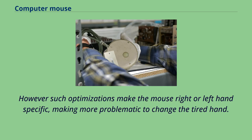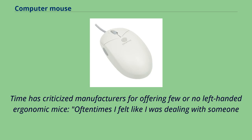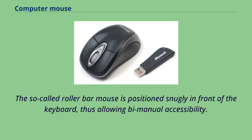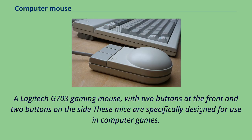Time has criticized manufacturers for offering few or no left-handed ergonomic mice. Another solution is a pointing bar device — the so-called roller bar mouse, positioned snugly in front of the keyboard for easy manual accessibility. Gaming mice such as the Logitech G703 are specifically designed for use in computer games, typically employing a wider array of controls and buttons, with designs that differ radically from traditional mice. They may also have decorative monochrome or programmable RGB LED lighting.